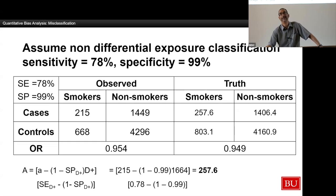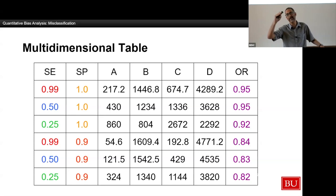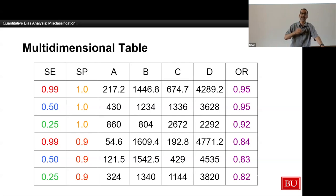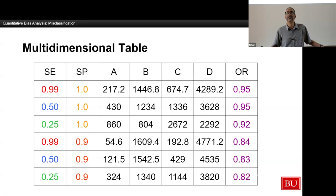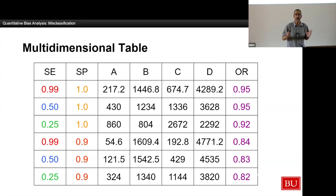So now we can just change the numbers. Here's a table of bias-adjusted odds ratios under a set of values for sensitivity and specificity. In the top three rows, specificity is perfect; in the bottom three, specificity is set at 90%. I've changed sensitivity from 99% to 50% to 25%. Look at the bias-adjusted odds ratios — they barely move. And to the extent that they move, they actually move in the wrong direction — toward the conclusion that smoking during pregnancy is protective against incident breast cancer, which nobody thinks is true.